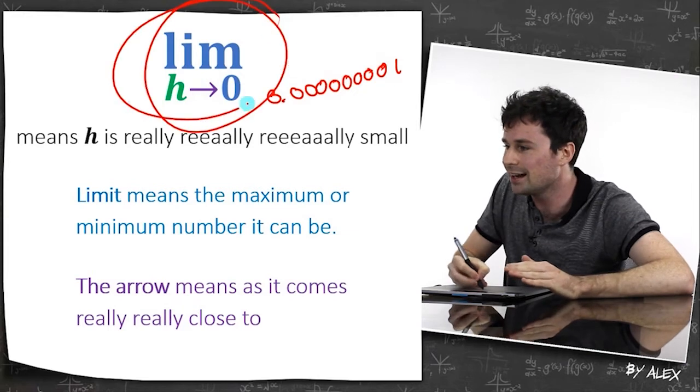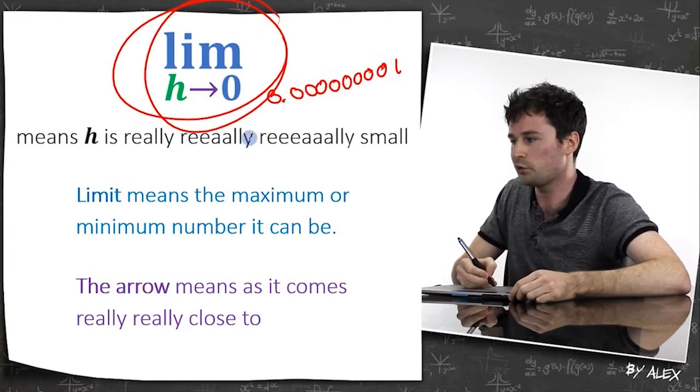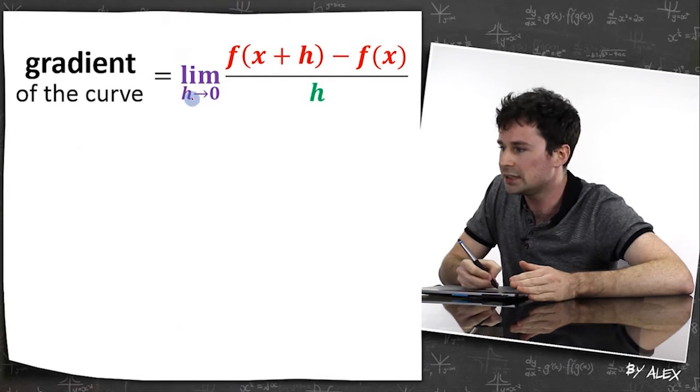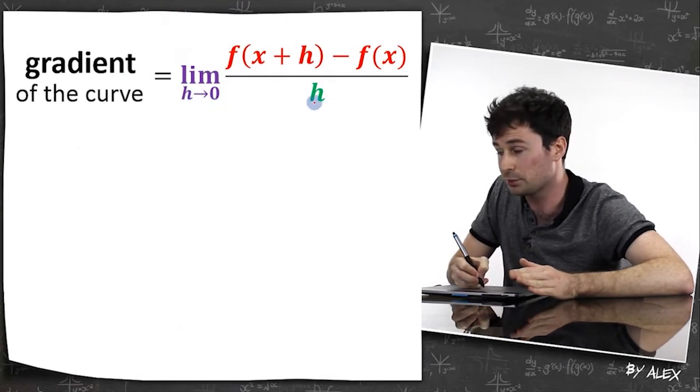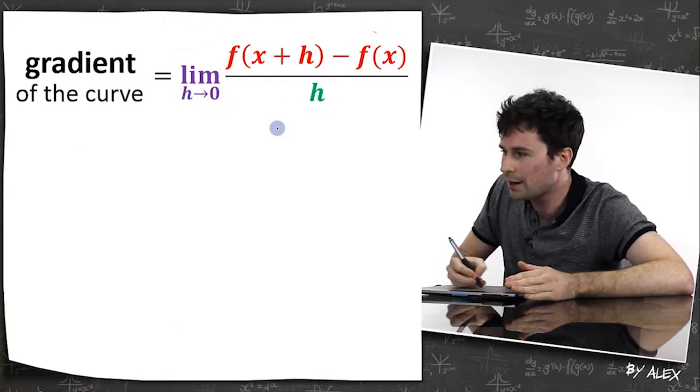So this whole thing here just means h is really, really small. So we've got the gradient of the curve where the limit of h goes to zero, this means this h is really, really small, and then we've got the gradient here.